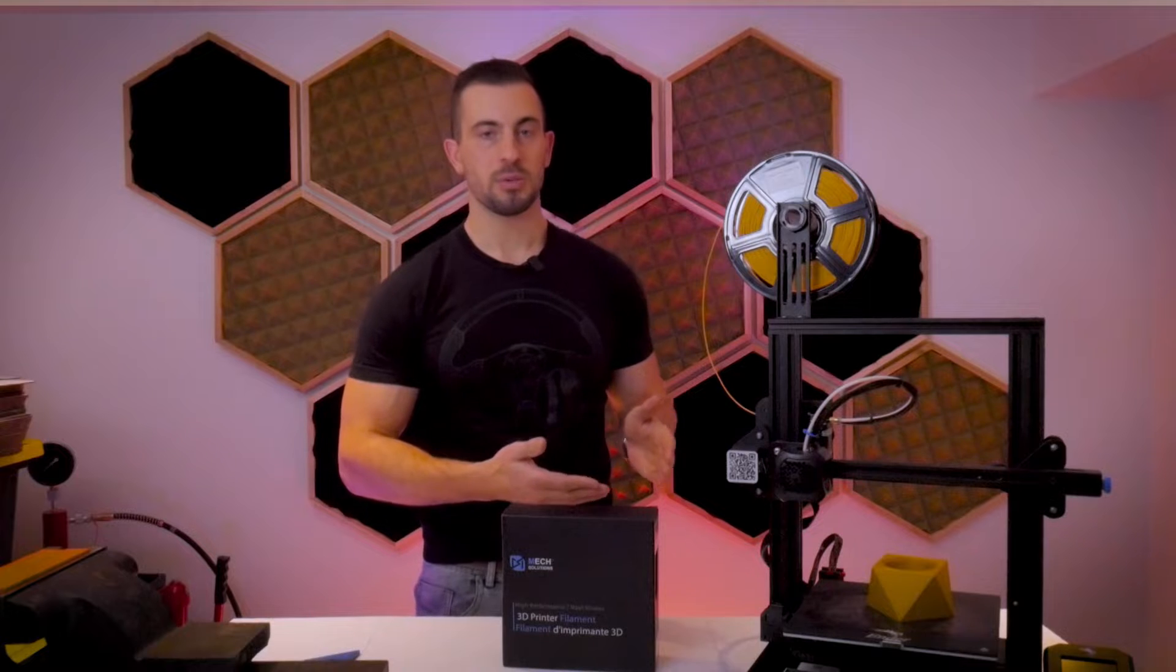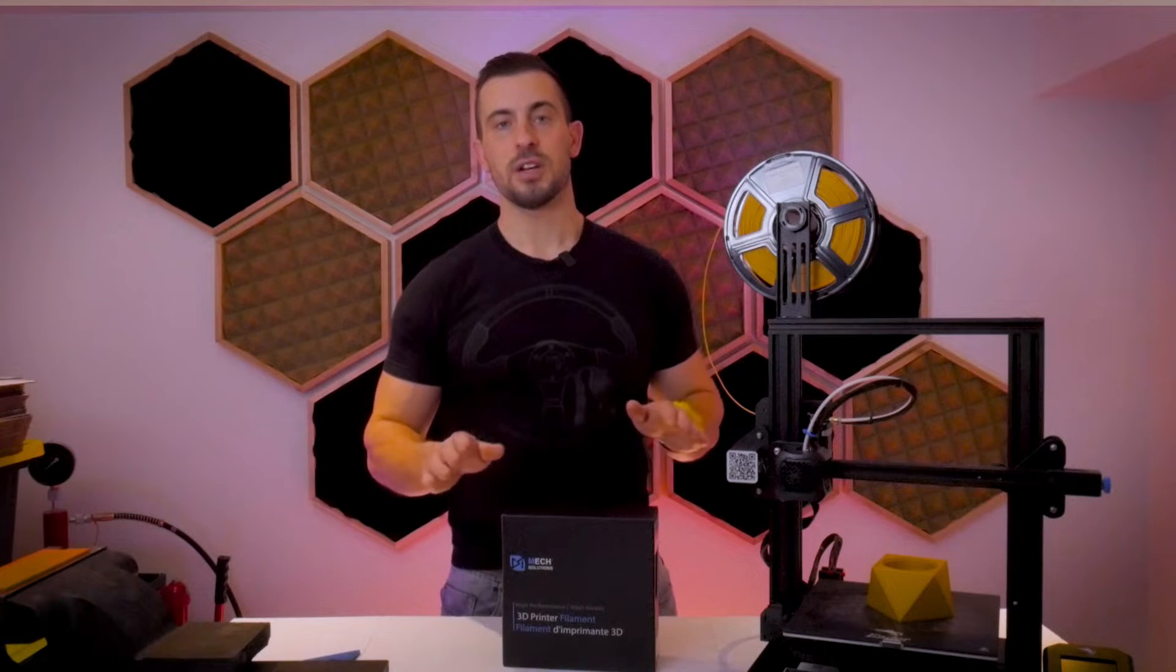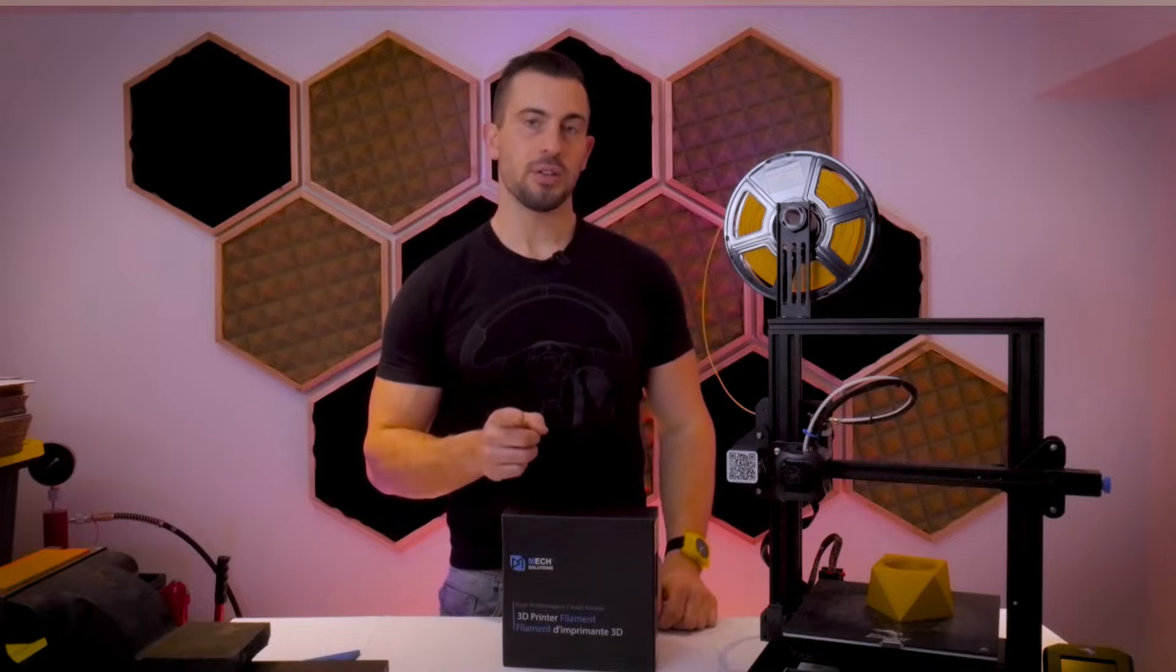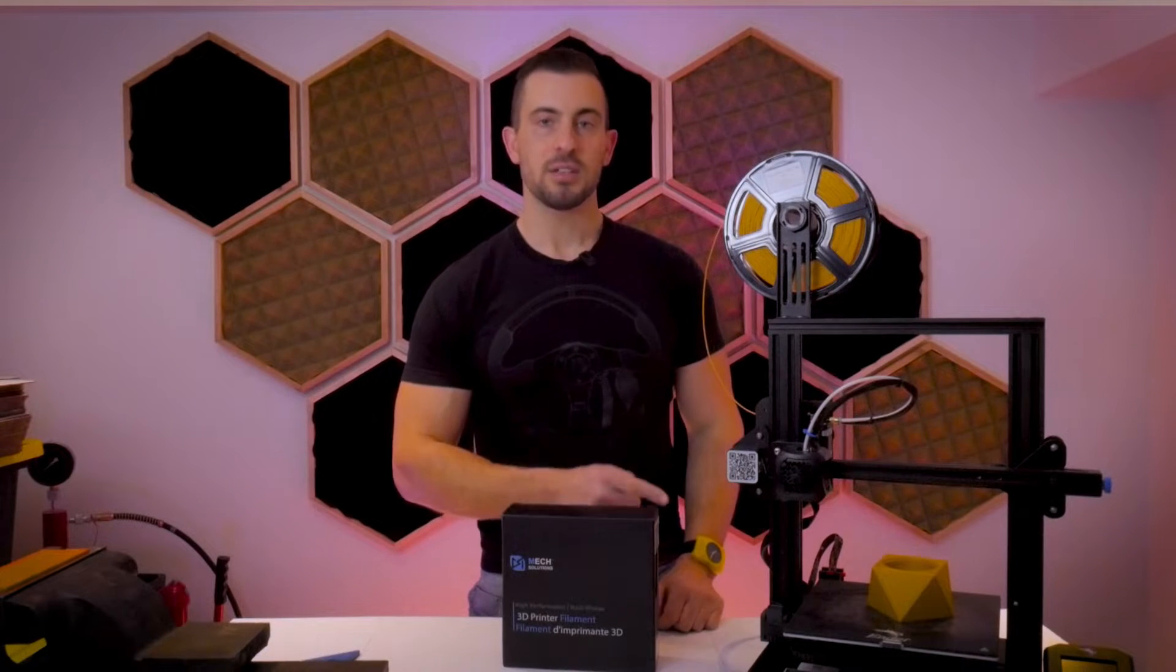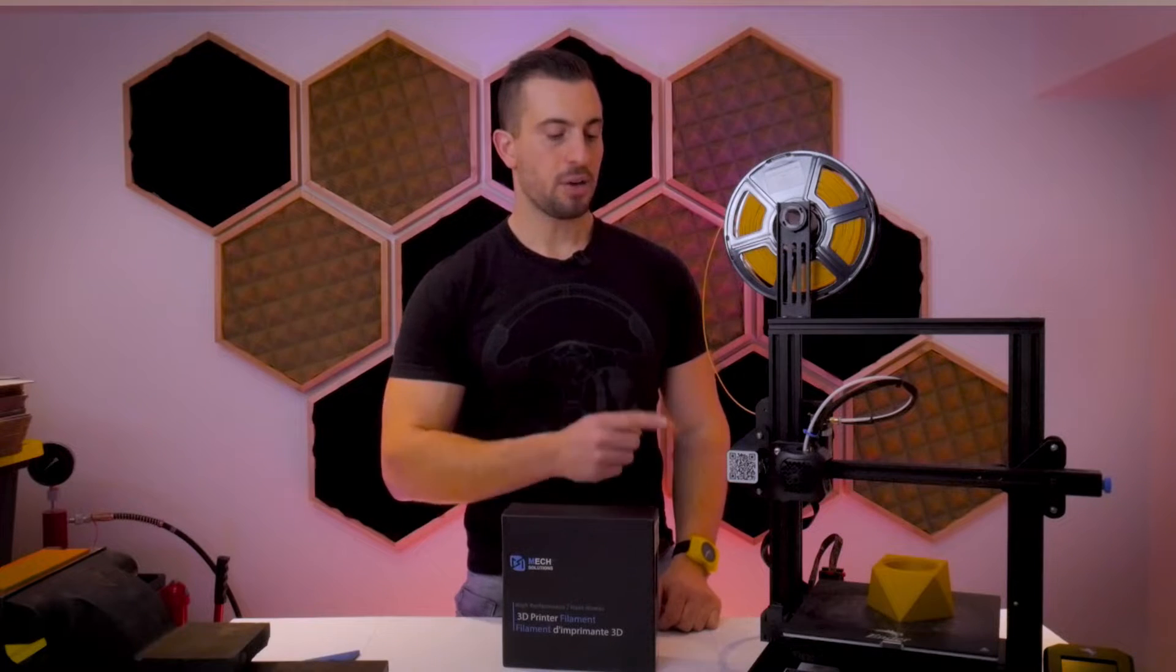You can find all of the 3D printable parts in the video description below. I always make all my design files available so you can download those. Right now we're going to take a look at this adjustable Z end stop, why you'd want to use it, and how you can install it on the Ender 3 or your clone.